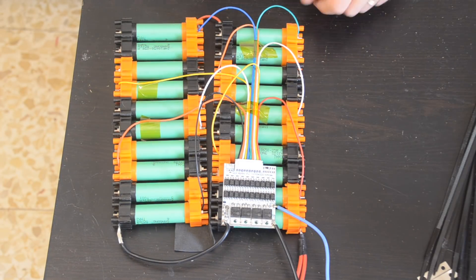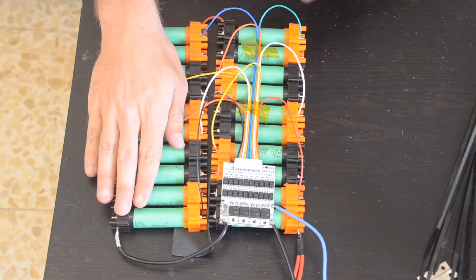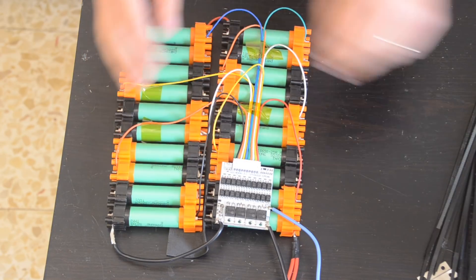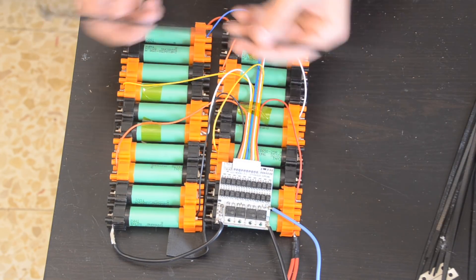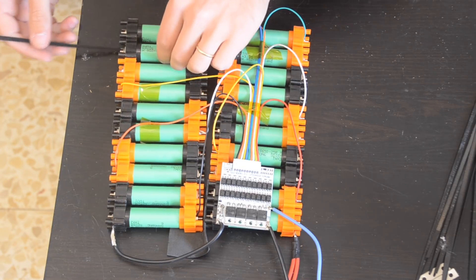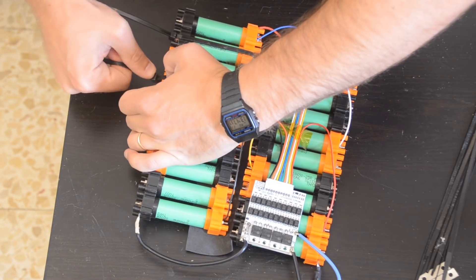Now, because we're using these batteries in a vibration-heavy environment, like on a skateboard or an e-bike, we'll want to add some extra insurance and compress the caps together so they can't work their way off over time. For wider packs, you'd want to use some type of compression plates on either side. But since our pack is only one cell wide, we can use zip ties to achieve the same effect.